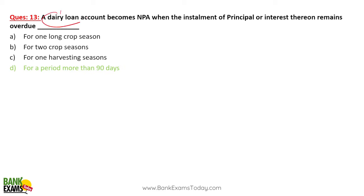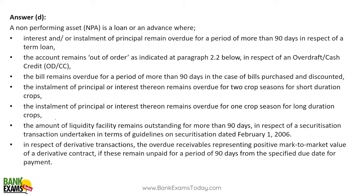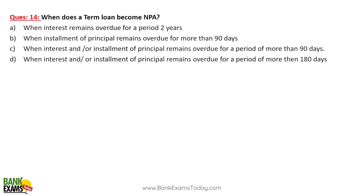A dairy account becomes NPA when the installment of principal or interest thereon remains overdue for more than 90 days. A dairy account is not an agriculture account, so the harvesting season rule does not apply here. A dairy is a normal business account.